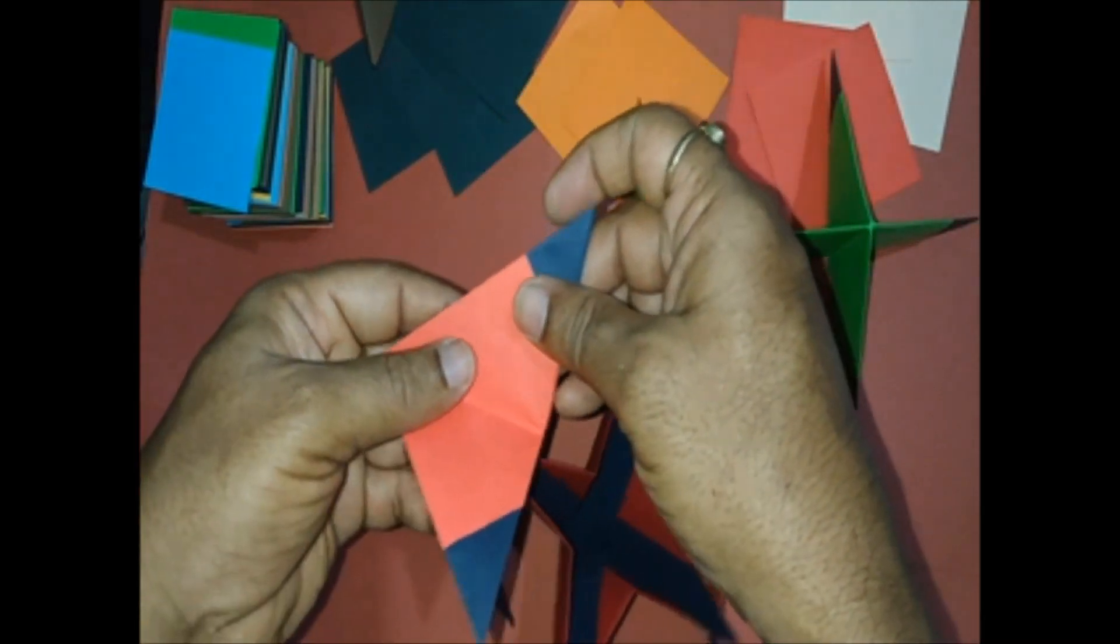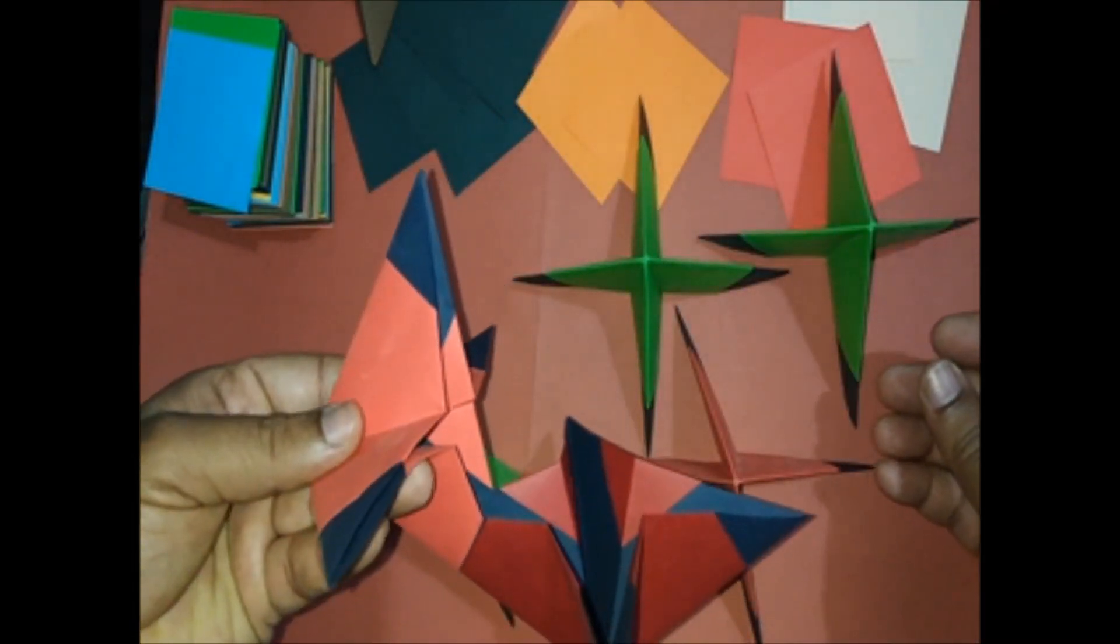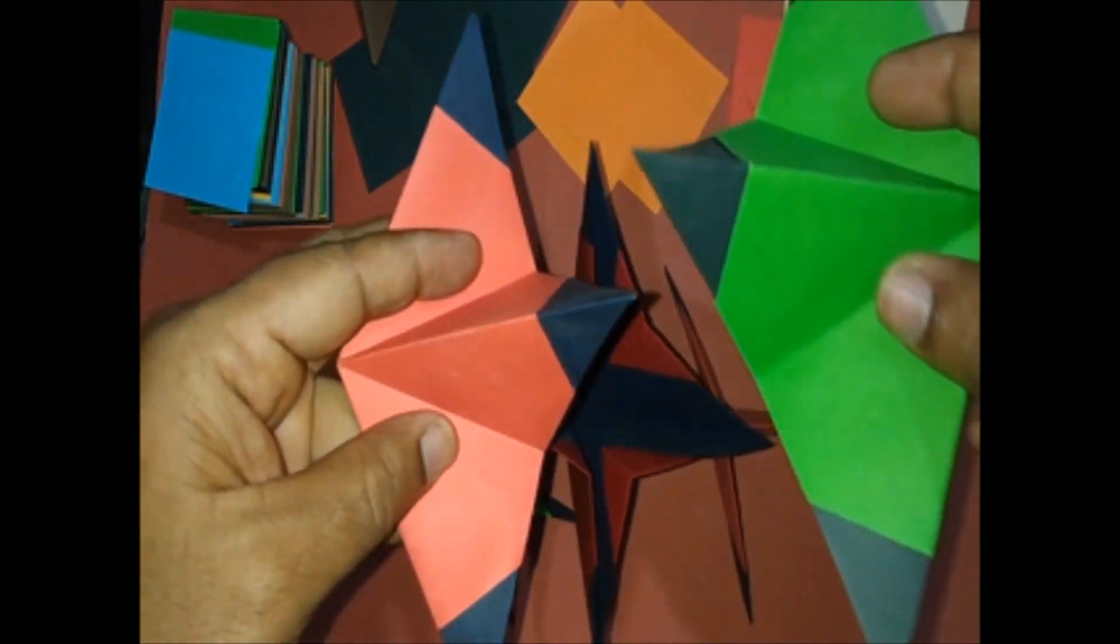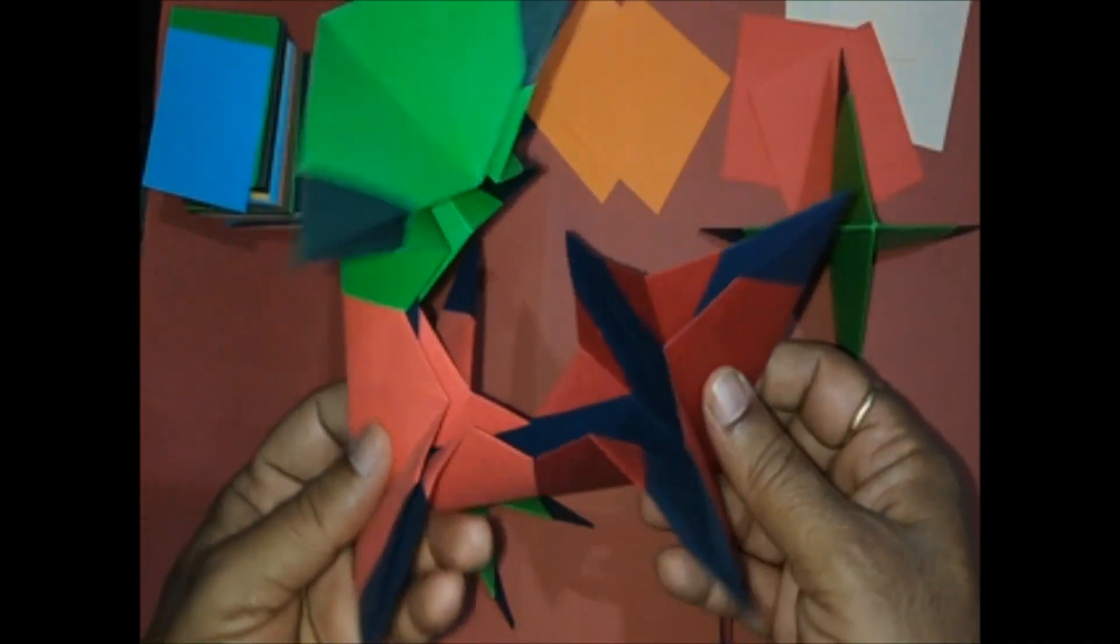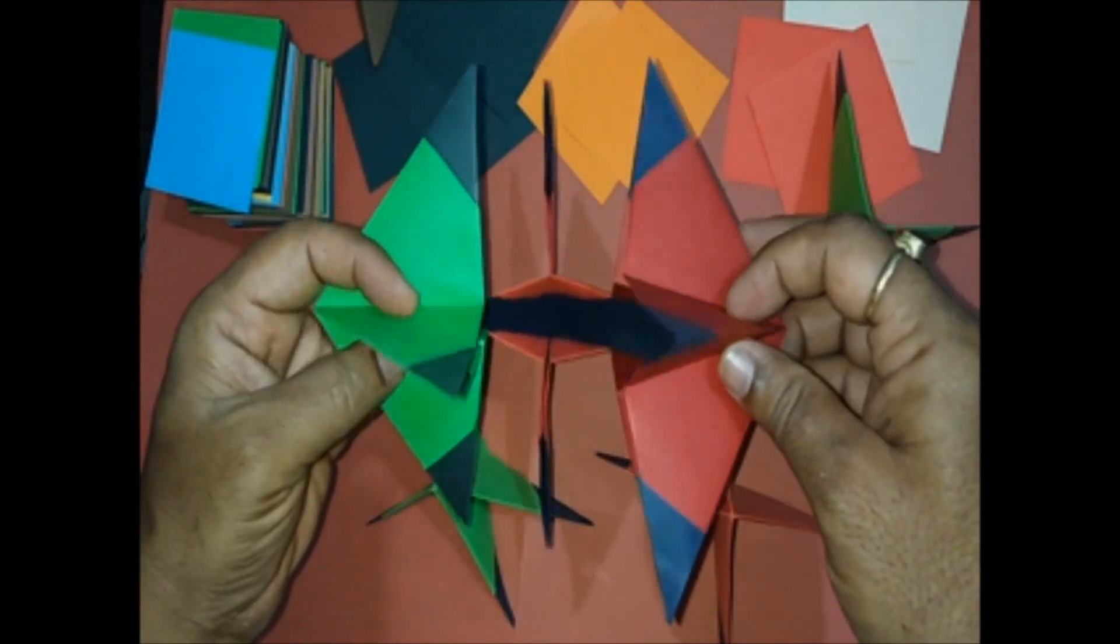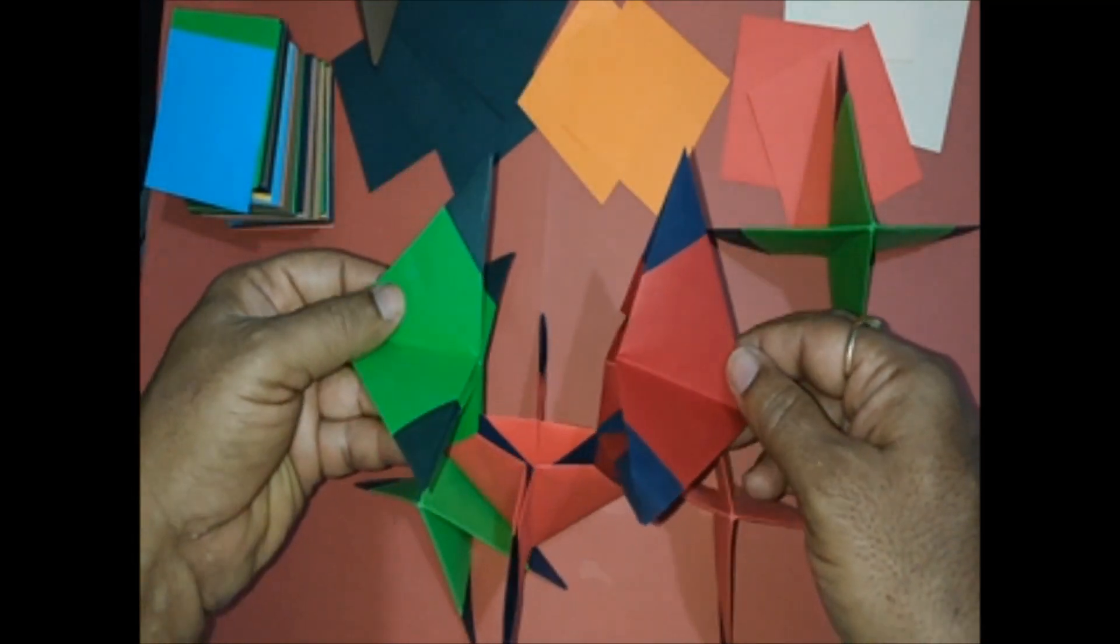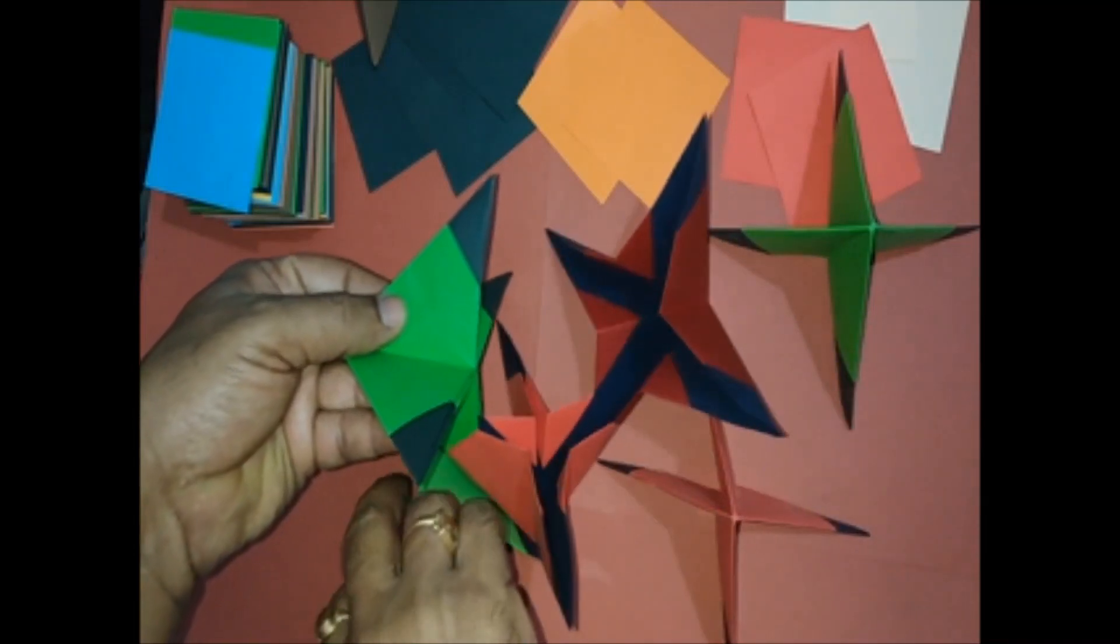Take a third unit and proceed in the same way. We are observing that for each unit we are leaving one flap on either side.